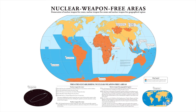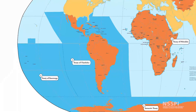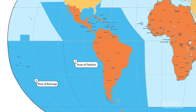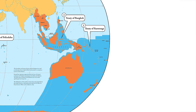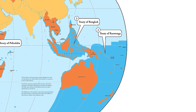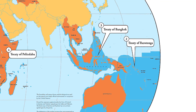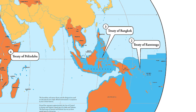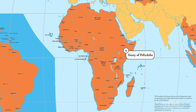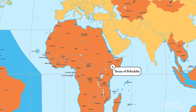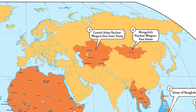The Treaty of Tlatelolco, which covers Latin America and the Caribbean, was signed in 1967. Then the Treaty of Rarotonga, covering the South Pacific, in 1985. The Treaty of Bangkok, which covers Southeast Asia, in 1995. The Treaty of Pelindaba, which covers Africa, was signed in 1996. And finally, the Treaty of Semipalatinsk, which covers Central Asia, in 2006.